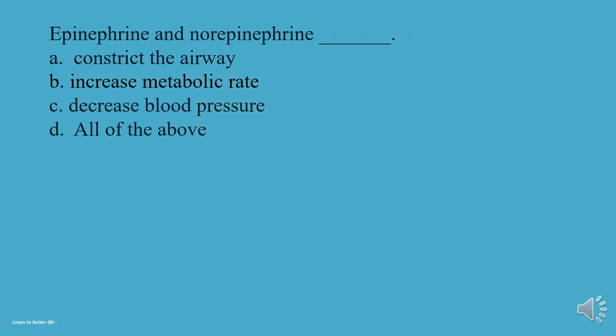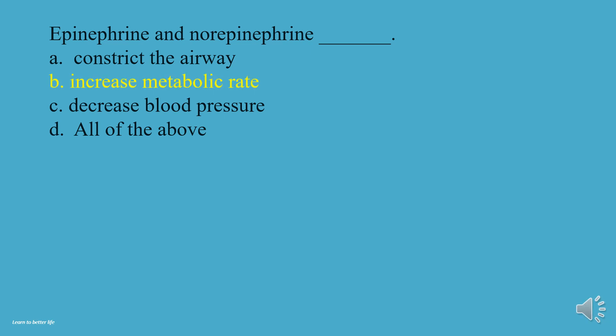Epinephrine and norepinephrine: A, Constrict the airway. B, Increase metabolic rate. C, Decrease blood pressure. D, All of the above. The answer is B, Increase metabolic rate.